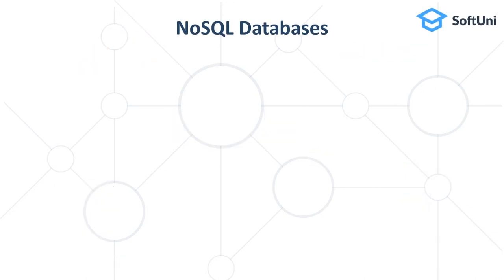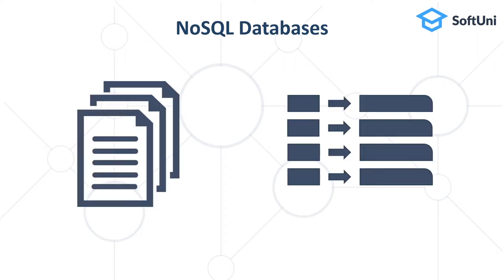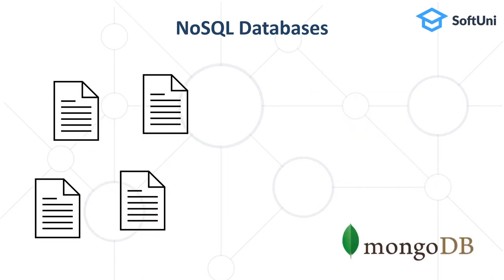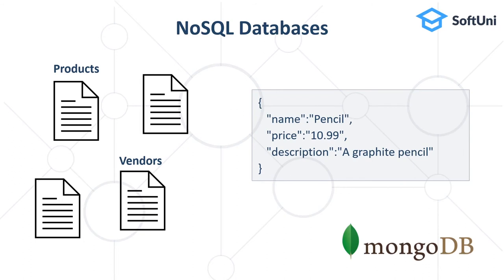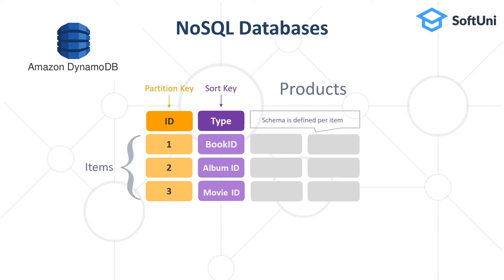NoSQL databases, or non-relational databases, hold collections of documents or key-value pairs. Document databases like MongoDB manage collections of documents such as products or vendors, where each document has a set of properties like name, price and description. They support retrieving, querying, creating, modifying and deleting documents. Key-value pair databases such as Amazon DynamoDB store keys mapped to values, also known as dictionaries. They support fast search by key but storing collections of data is less flexible. Key-value data storage systems are good for organizing simple data — for example, a phone book.